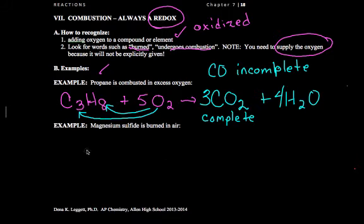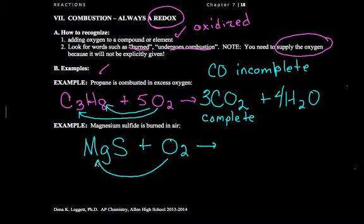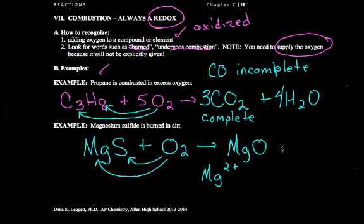Now, let me show you a slight twist compared to pre-AP. We have magnesium sulfide reacting with oxygen. Again, we want to make compounds of oxygen with each of these elements. Magnesium's pretty straightforward because magnesium wants to be plus two. So we'd make magnesium oxide.